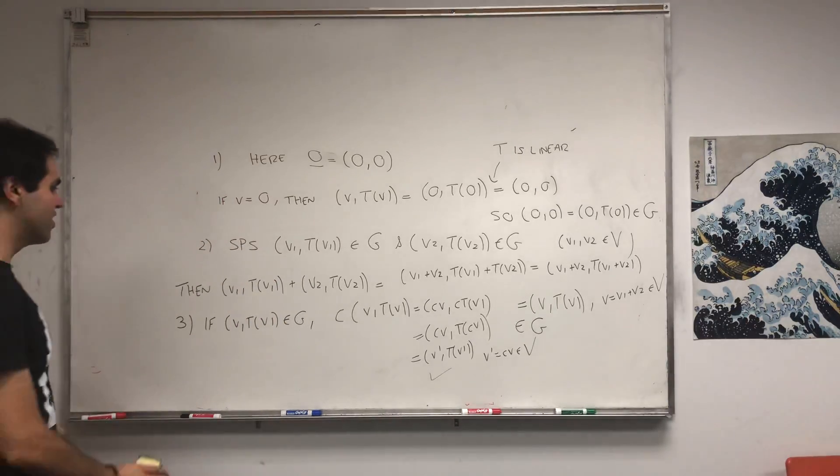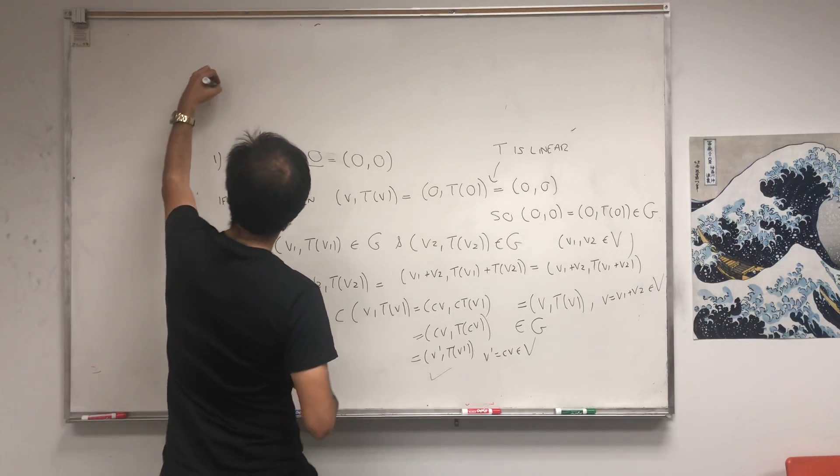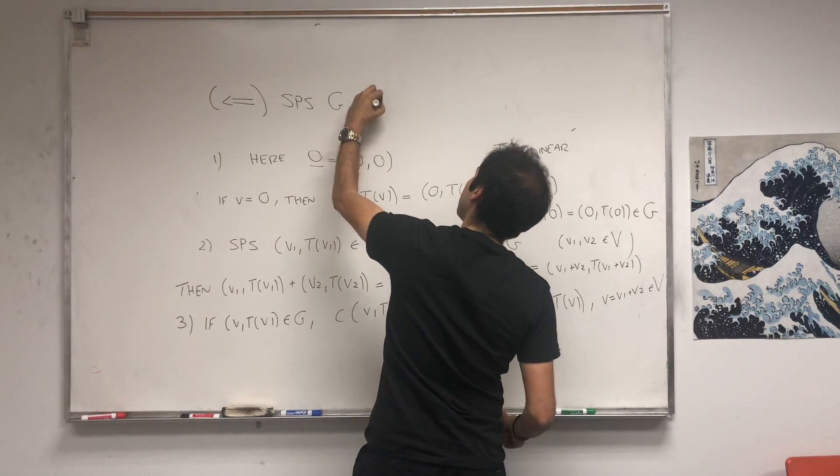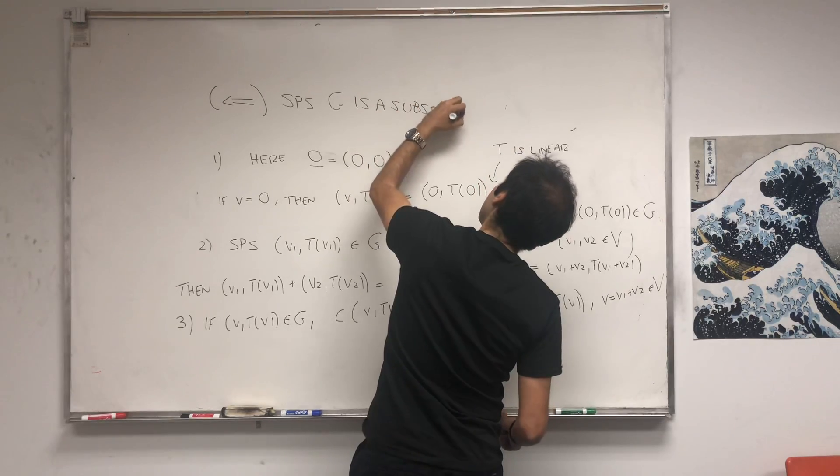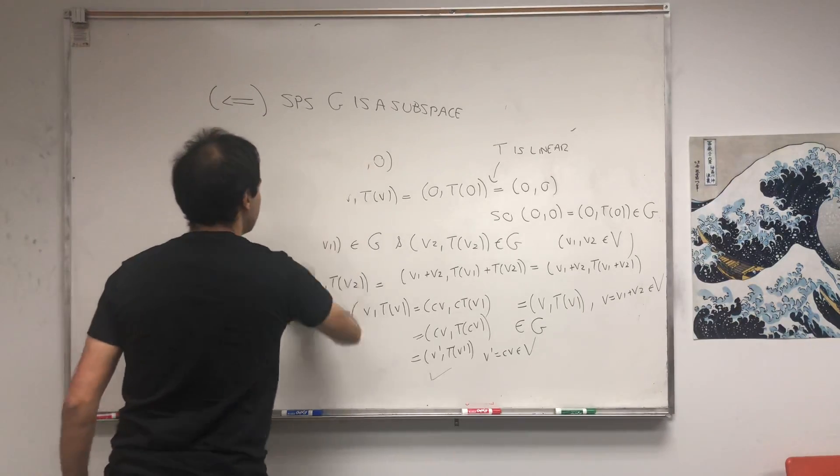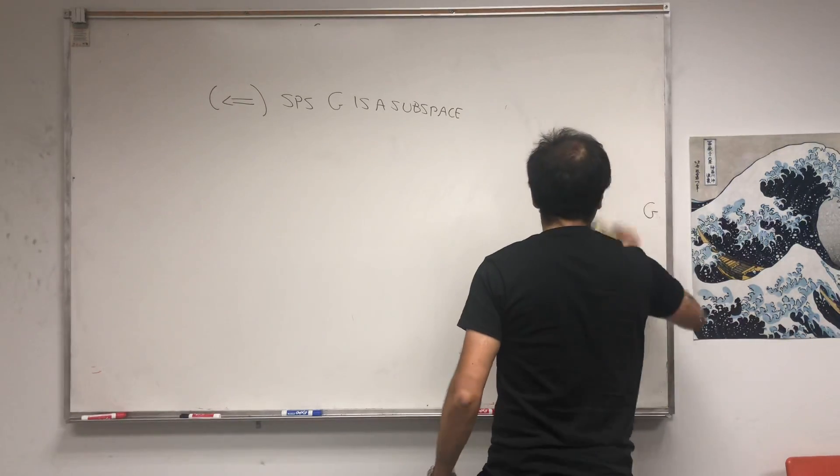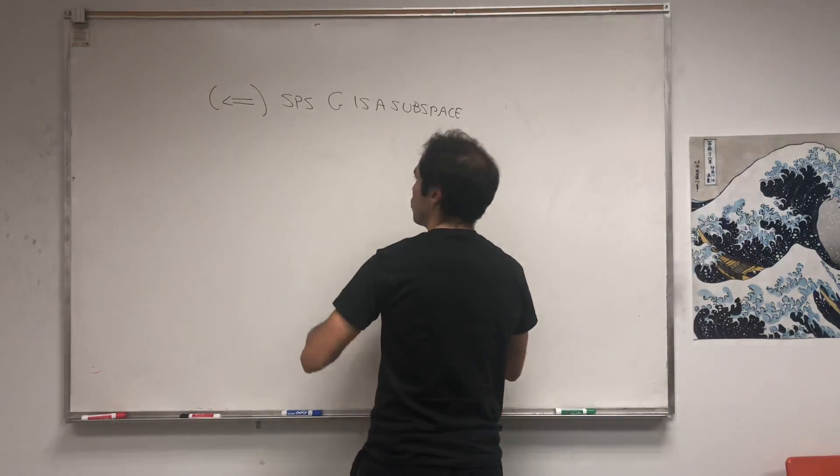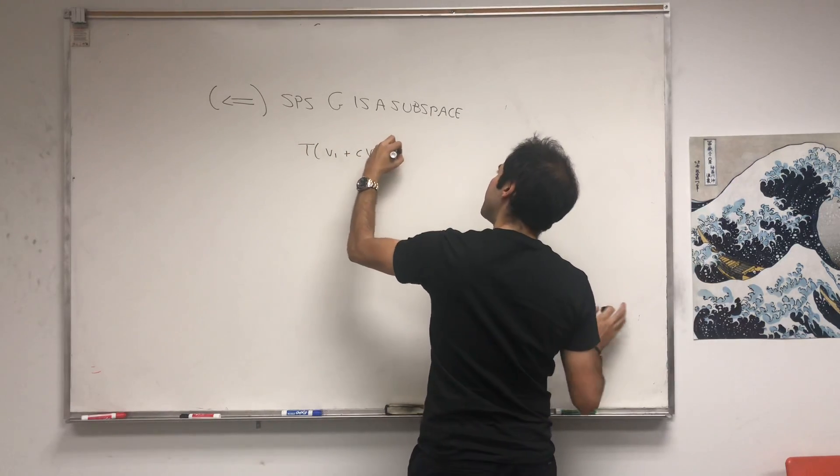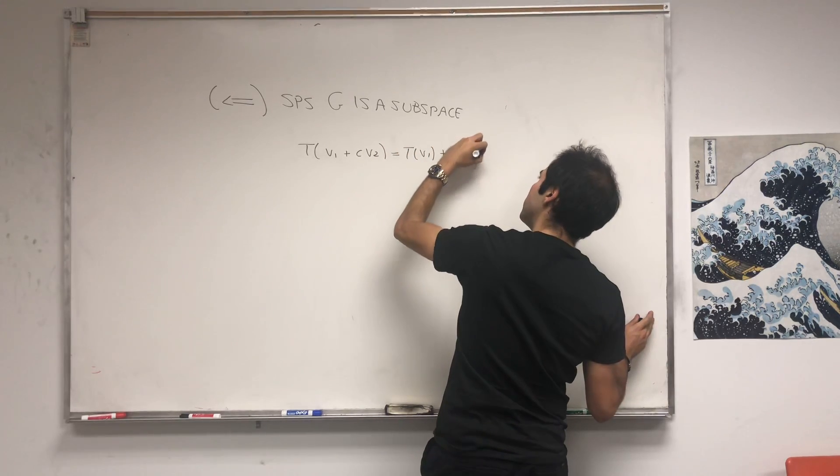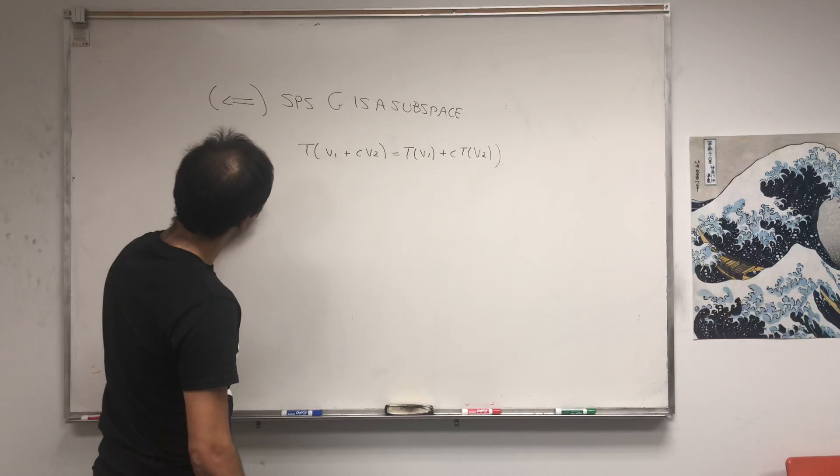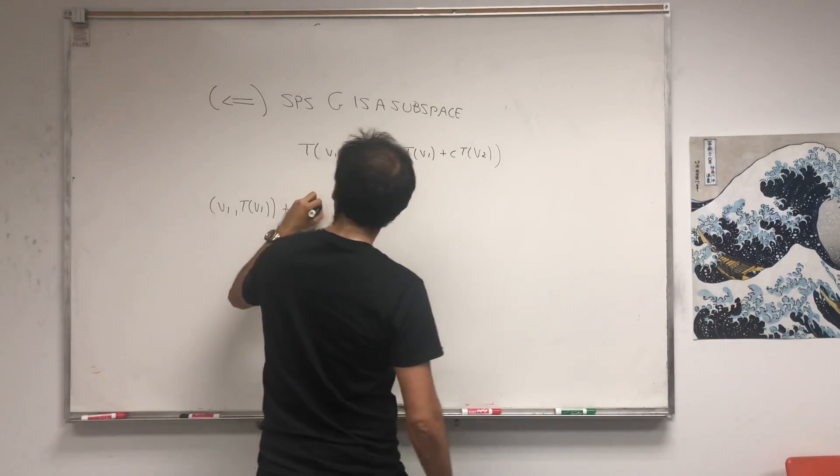What's interesting is also the converse. How come G being a subspace implies that T is linear? Now suppose G is a subspace. Let's show T is linear, which means all you have to show is that T(v₁ + cv₂) equals T(v₁) + cT(v₂).